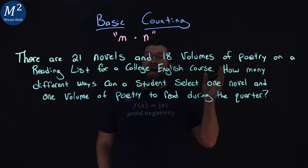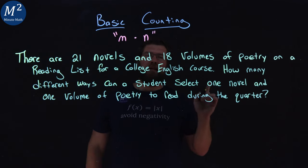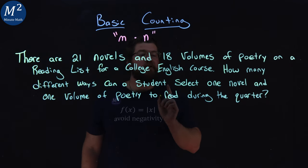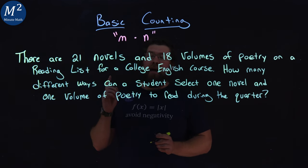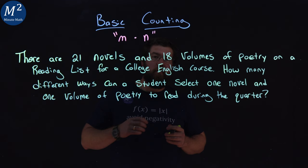There are 21 novels and 18 volumes of poetry on a reading list for a college English course. How many different ways can a student select one novel and one volume of poetry to read during the quarter?